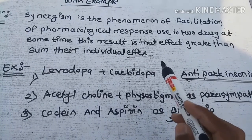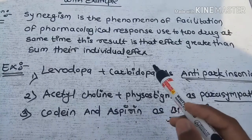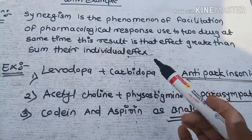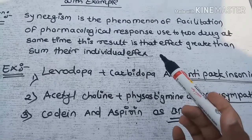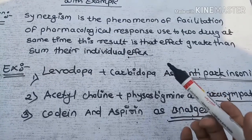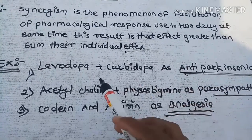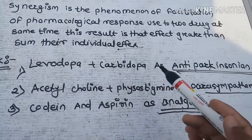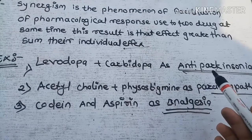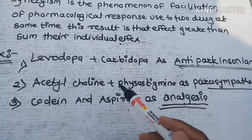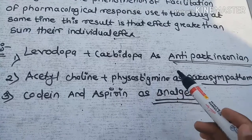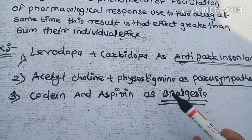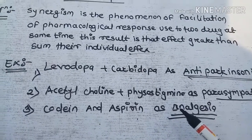Synergism ka phenomenon hota hai ki do drugs ko combination mein lene ke baad jo effect hota hai, woh greater hota hai individual effects ke sum se — isse synergism kehte hain. For example, Levodopa plus Carbidopa anti-Parkinsonism mein use hota hai. Acetylcholine plus Physostigmine parasympathomimetic ke roop mein, aur Codeine plus Aspirin analgesic ke roop mein use hota hai.